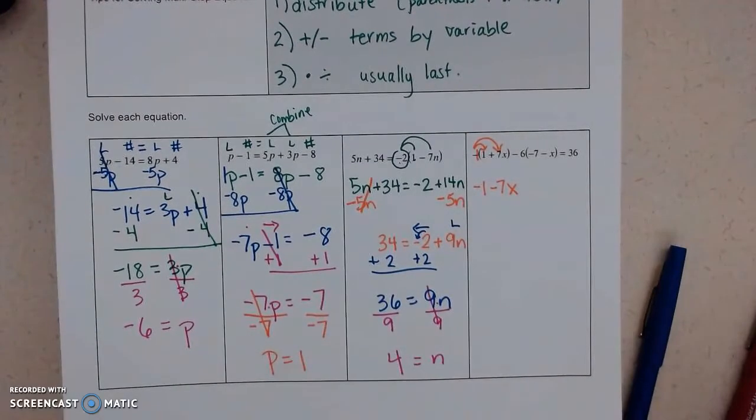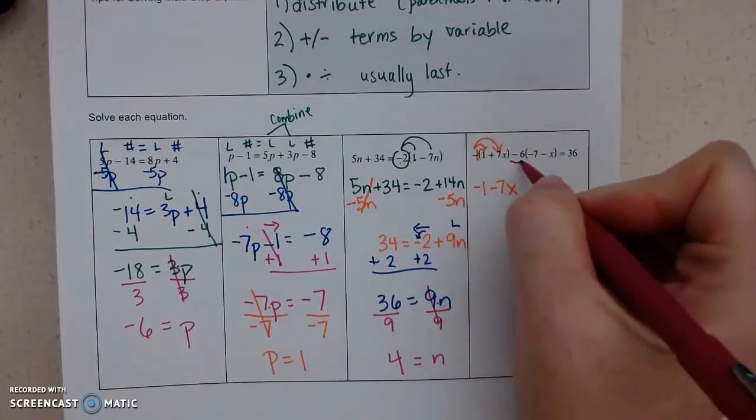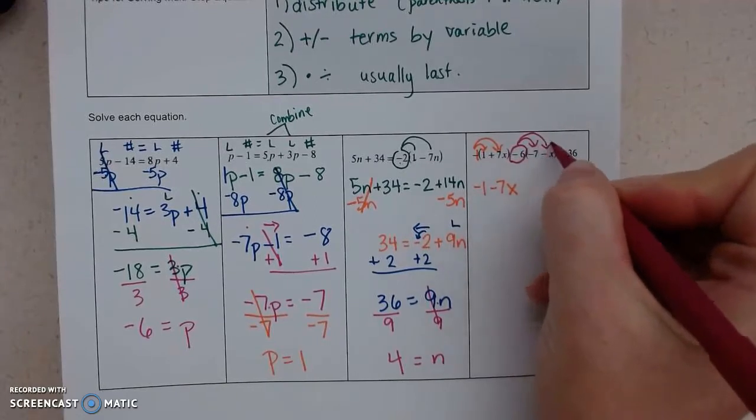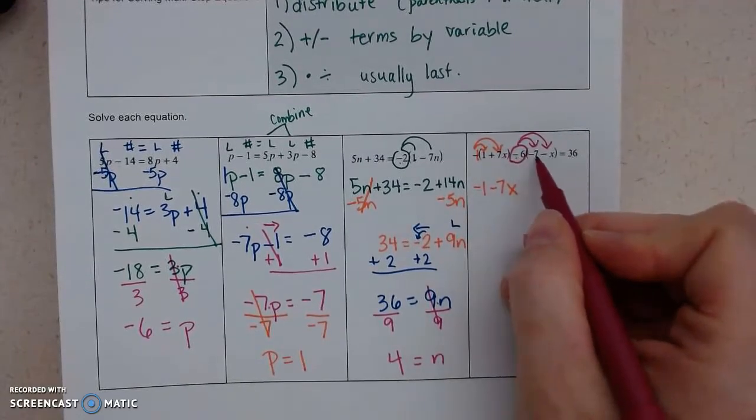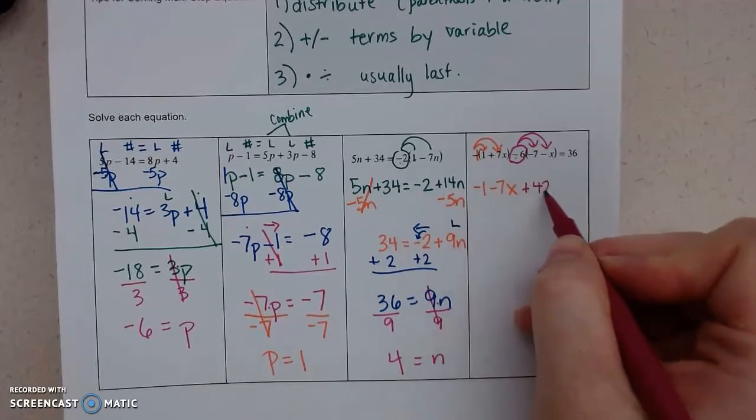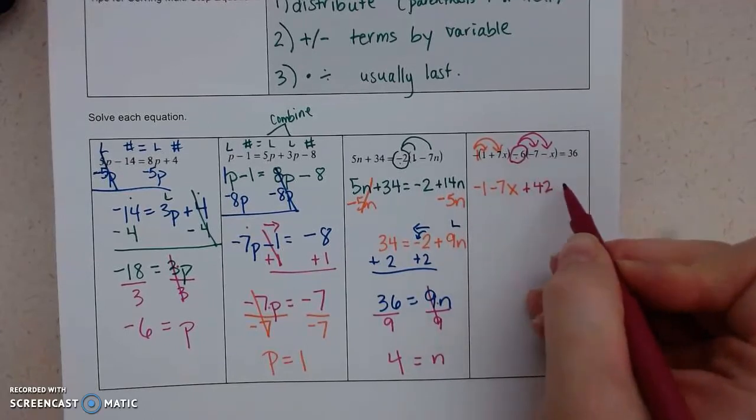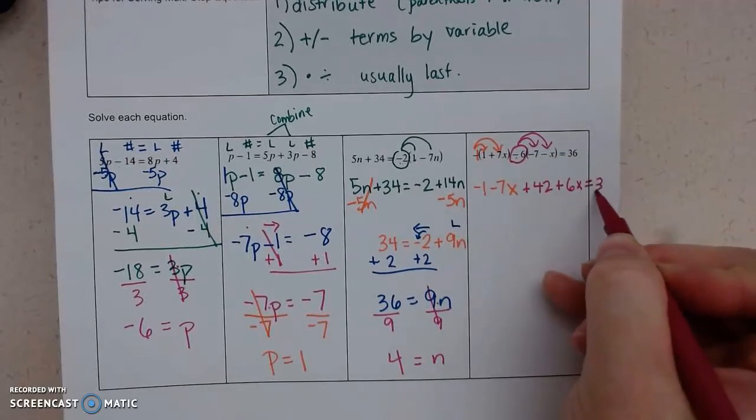Now, careful. This is where the errors always happen. This is a negative 6 that we want to multiply. So negative 6 times negative 7. Negative 6 times negative 1. Equals 36.